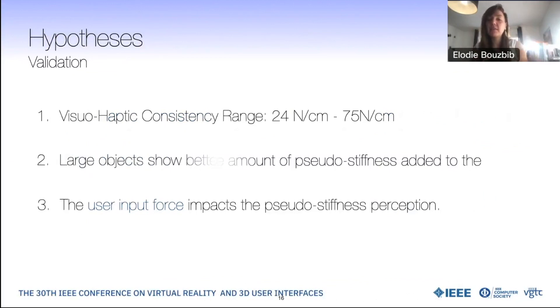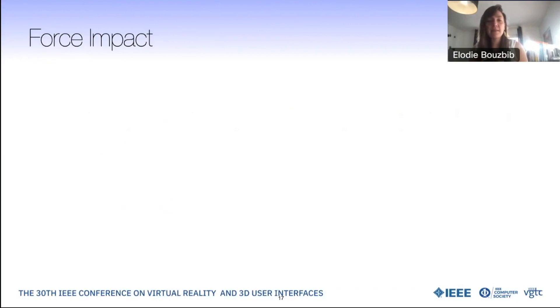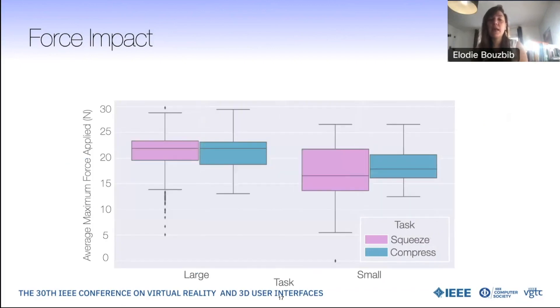For the object scales, we found that large and small objects showed the same thresholds, but with better results for larger objects than smaller ones. Yet, when looking at the force impact, if we look at the maximum force applied here on the y-axis and each object scale on the x-axis and the task involved with the different colors, we will see that the force applied on large objects here on the left was significantly higher than the ones on small objects. Therefore, we cannot decorrelate the object scales and the user force inputs in this hypothesis.